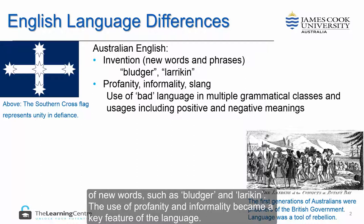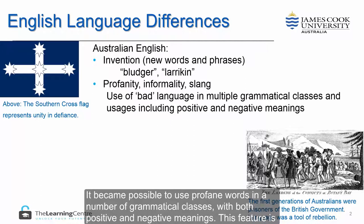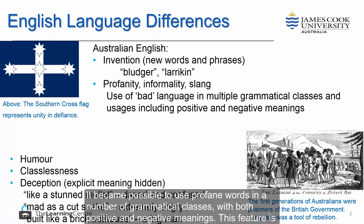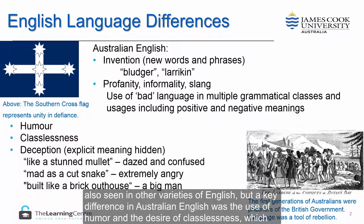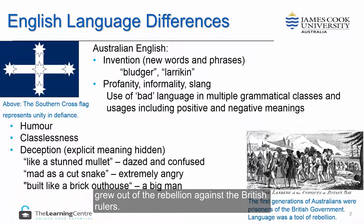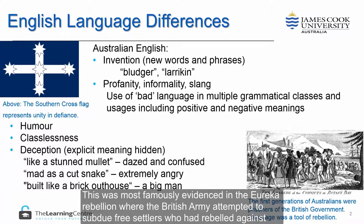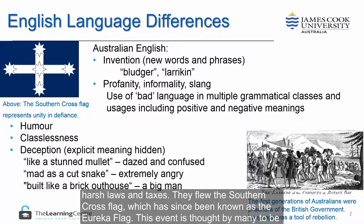The use of profanity and informality became a key feature of the language, and it became possible to use profane words in a number of grammatical classes with both positive and negative meanings. A key difference in Australian English was also the use of humour and the desire for classlessness, which grew out of rebellion against British rulers. This was most famously evidenced in the Eureka Rebellion, where the British army attempted to subdue free settlers who had rebelled against harsh laws and taxes.